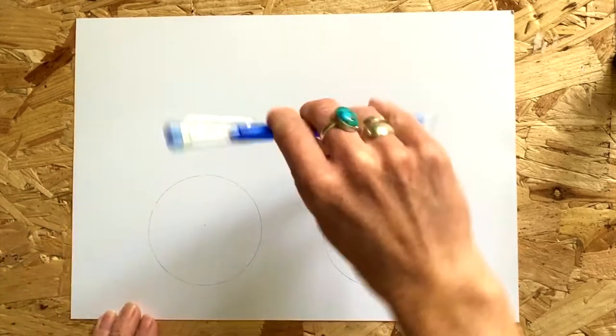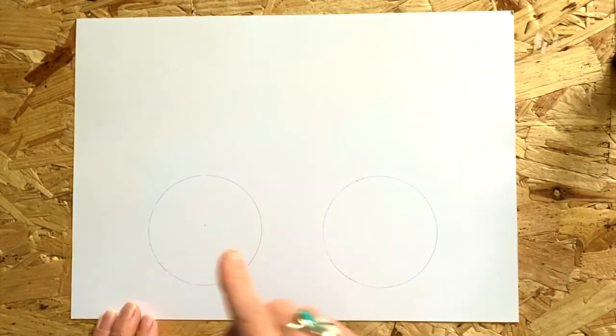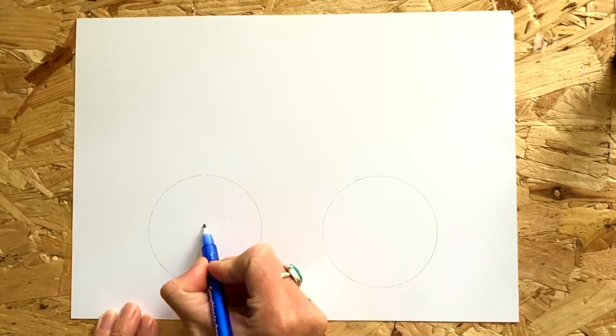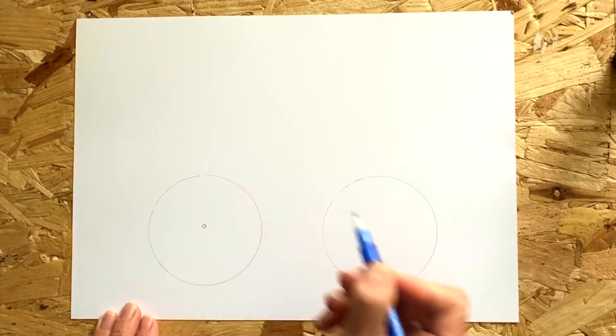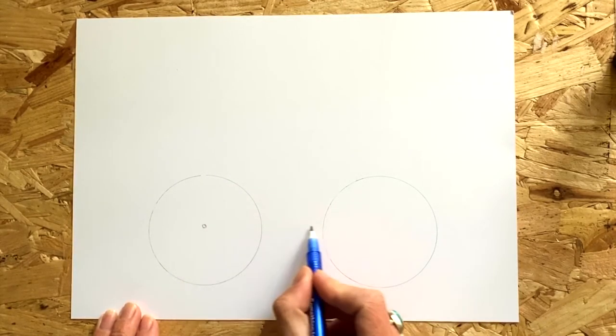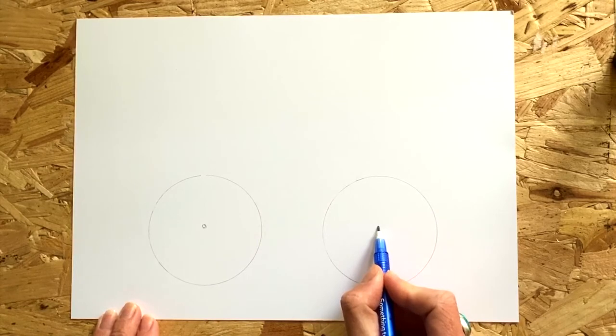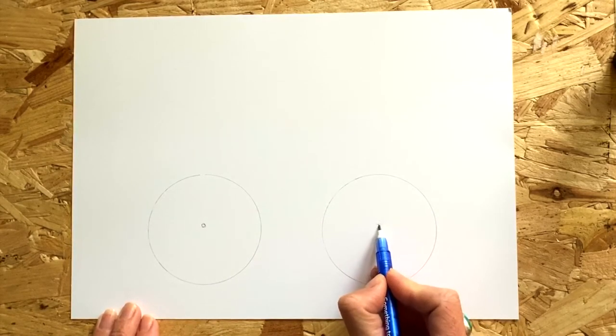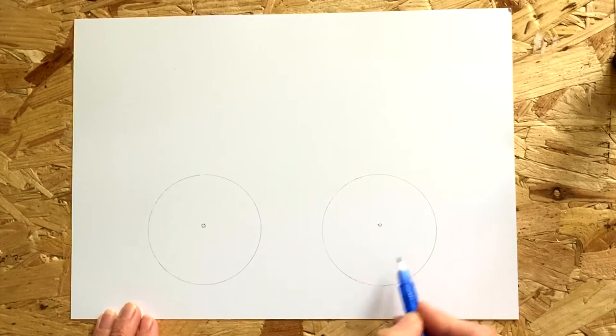I drew a dot where I thought the middle of my circle was and then I just used my pencil just to see if I was happy with that's about the middle. As you can see from my picture, it's not actually accurate but it doesn't matter. Do the same for the other wheel.